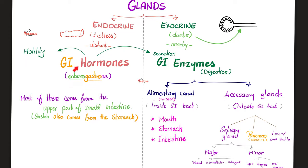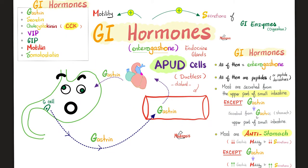That's why the GI hormones are collectively known as enterogastrones. The gastrointestinal hormones include gastrin, secretin, cholecystokinin, pancreozymin, vasoactive intestinal peptide, GIP, motilin, and somatostatin. Today we're talking about gastrin — it's probably the only hormone that likes your stomach. It boosts stomach motility and secretion. All the other hormones inhibit motility and secretion of the stomach, with few exceptions.